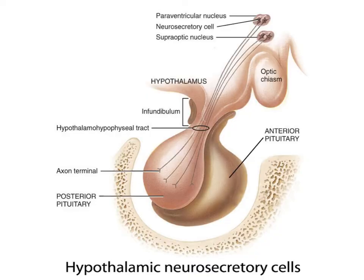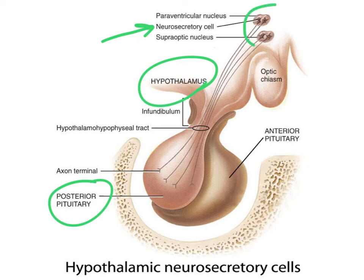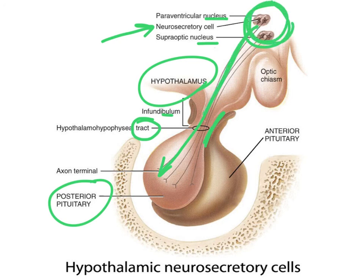Now let's look at the relationship between the hypothalamus and the posterior pituitary. As with the anterior pituitary, there are neurosecretory cells whose cell bodies are found in the hypothalamus in areas called nuclei — remembering that cell bodies in the CNS are called nuclei. Their axons travel to the posterior pituitary in bundles called tracts, passing through the infundibulum, which connects the posterior pituitary to the hypothalamus. Note there are no blood vessels here — hormones are synthesized in the cell body and released from the posterior pituitary directly into the blood.